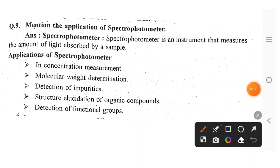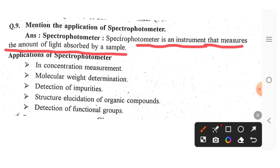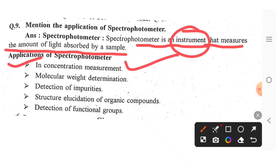Applications of spectrophotometer. A spectrophotometer is an instrument that measures the amount of light absorbed by a sample. We use it for absorbance measurement and for sample concentration measurement.